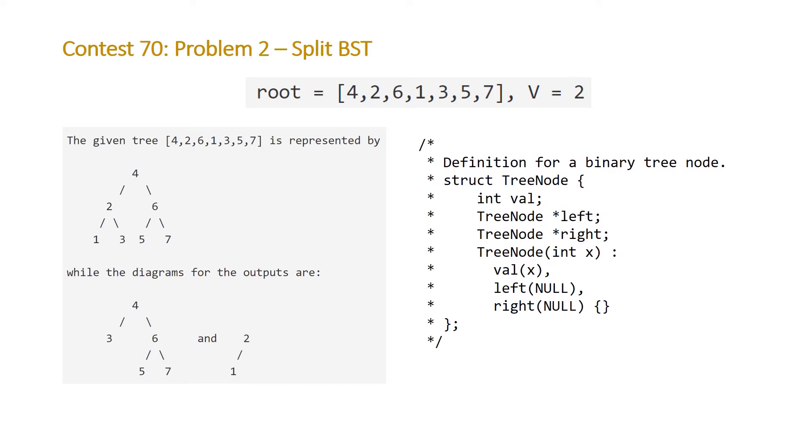Taking a look at the example that LeetCode provides us with, we're given the binary search tree with the values 4, 2, 6, 1, 3, 5 and 7 and the target value is equal to 2. As we can see on the left that's a visual representation of what our BST looks like and we should be able to split it into two trees containing the values 1 and 2 because those are less than or equal to our target value and the remaining values.